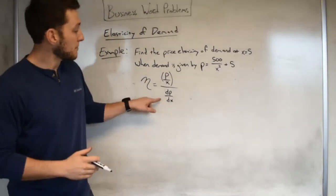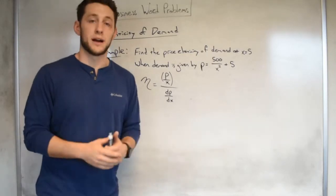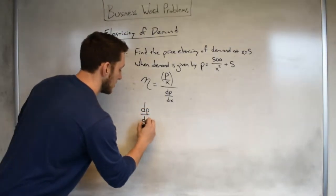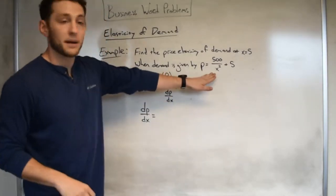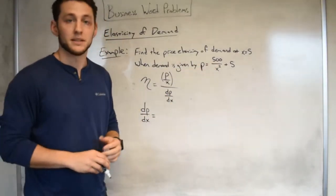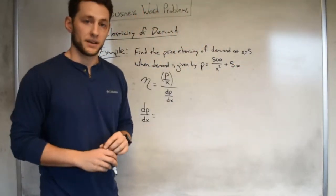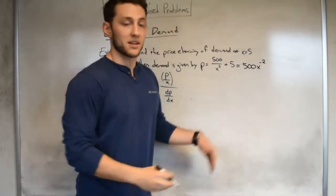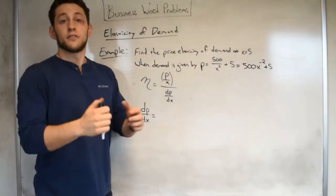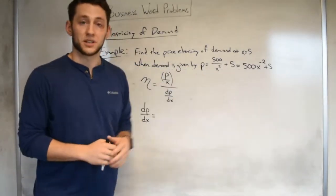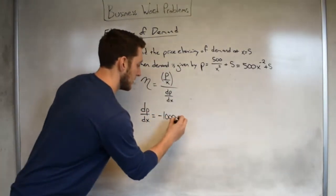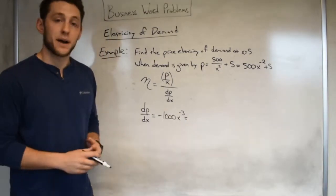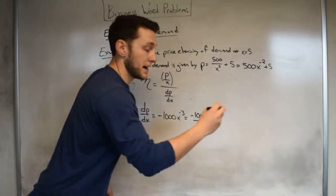Since we're after this thing, it might be helpful to go ahead and get our hands on dp over dx, or just p prime, the derivative of p with respect to x. In order to get dp over dx, it might be helpful to rewrite my original function since we have an x in the bottom, in the denominator. We could do this by making the power negative. This is just 500 times x to the negative 2 plus 5. From there, what we can go ahead and do is derive this function. That will give me negative 1,000 x to the negative 3, or writing this as a positive power, we could write that as negative 1,000 divided by x cubed.